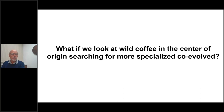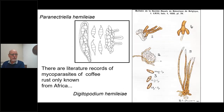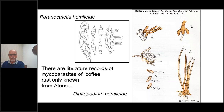We looked at the literature and found that there are at least two different species of microparasites on coffee leaf rust that only exist in Africa — Paranectria and Digitopodium hemileiae. We found the resources, went to Africa, and collected those two different mycoparasites. The World Coffee Research NGO was very effective in obtaining funds for us.